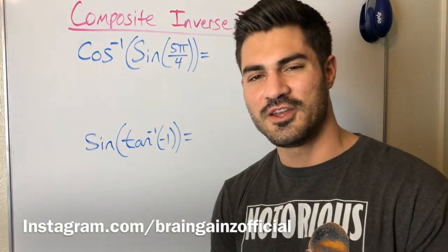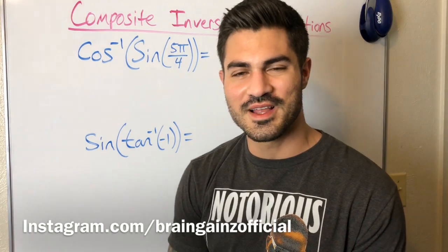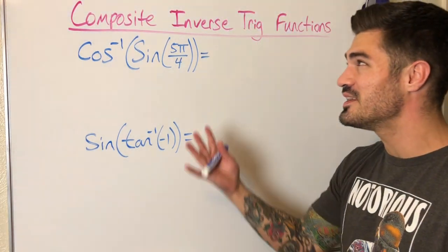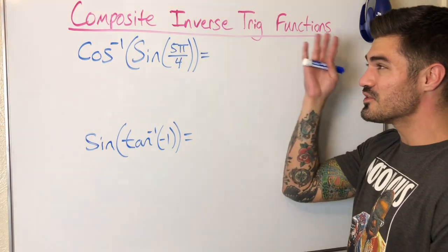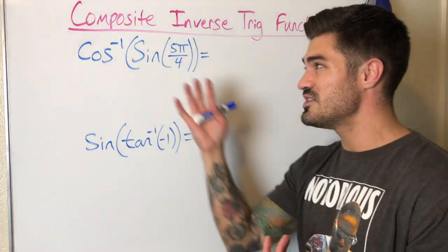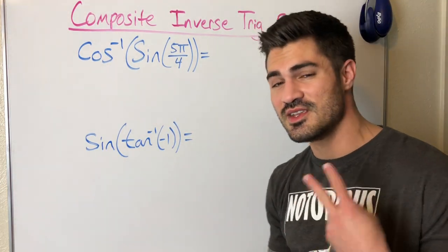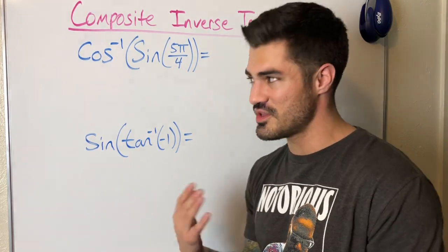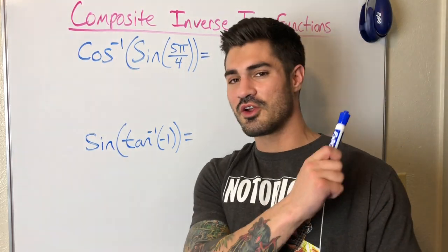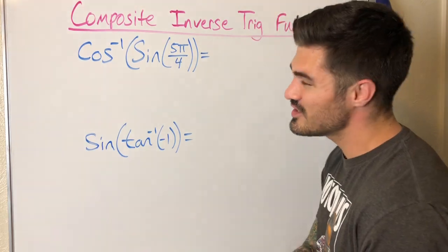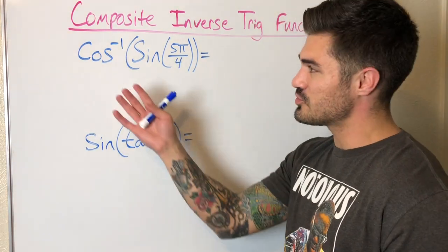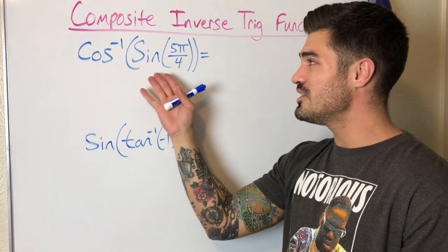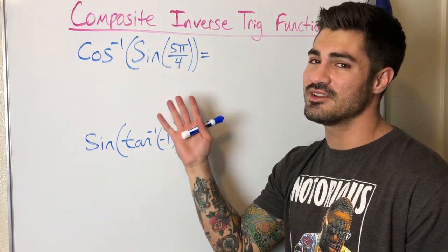Hello everybody, welcome to another video. Hope you're ready to flex those brain muscles. In this video we're going to continue talking about evaluating inverse trigonometric functions — composite functions. This is the second part of a two-part video series on this topic, so if you missed the first video click right up there. We're going to get into some harder examples where our functions are different — out here I have cosine inverse, and in here I have sine.